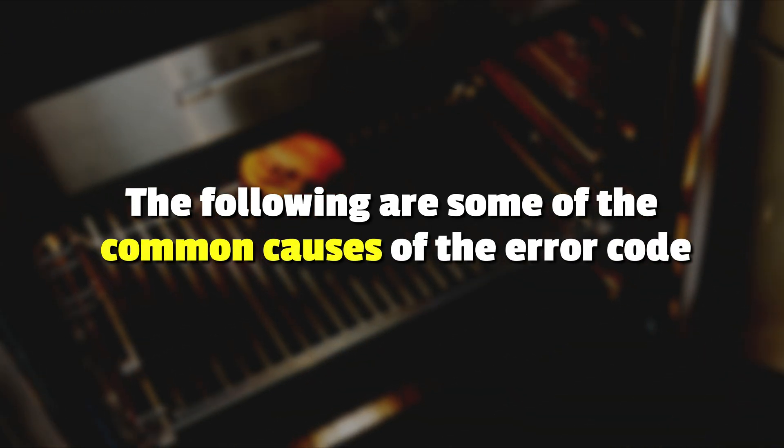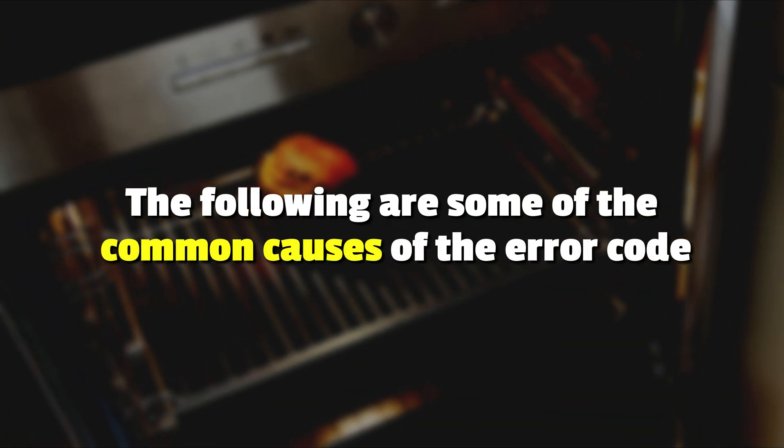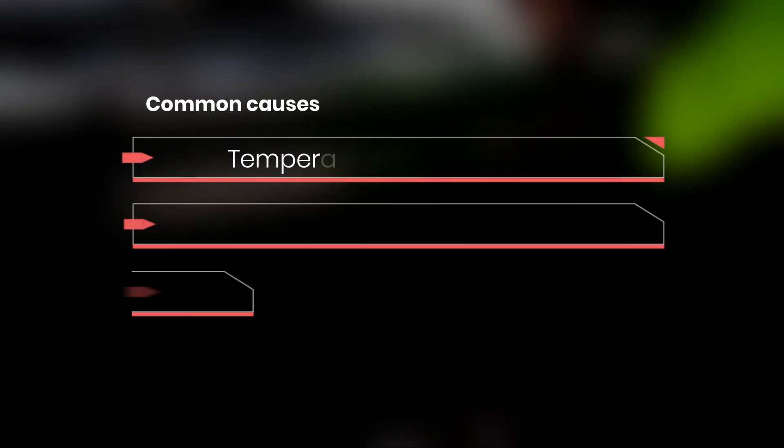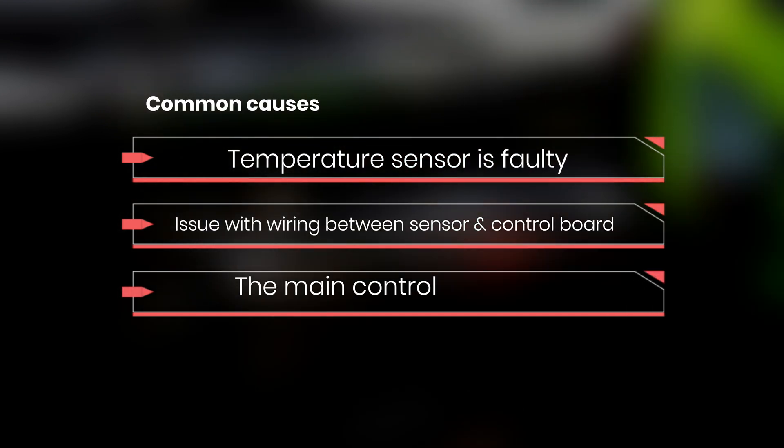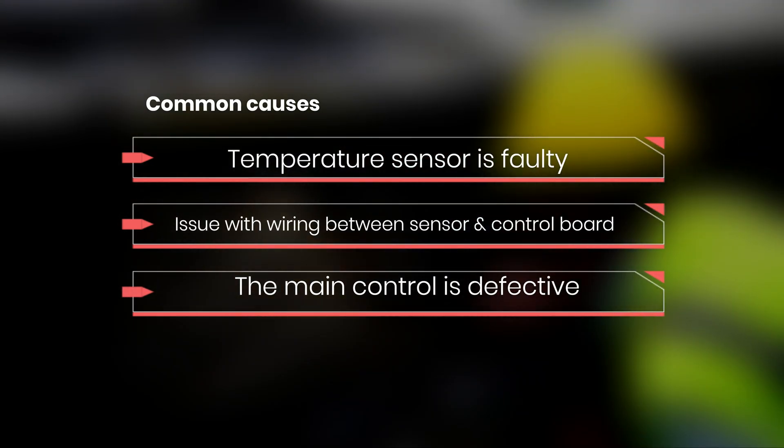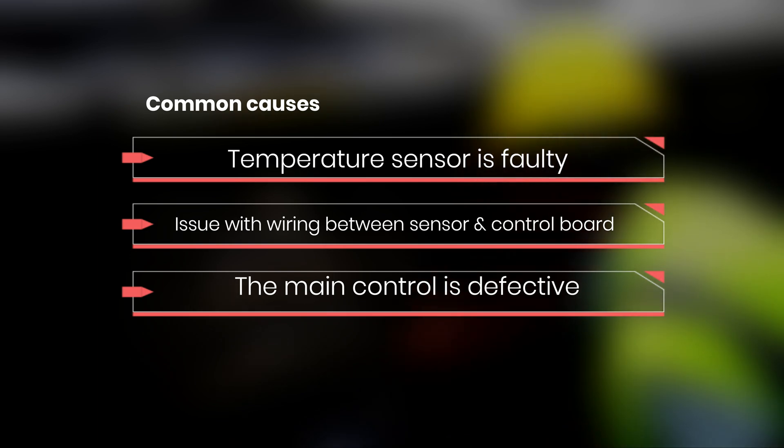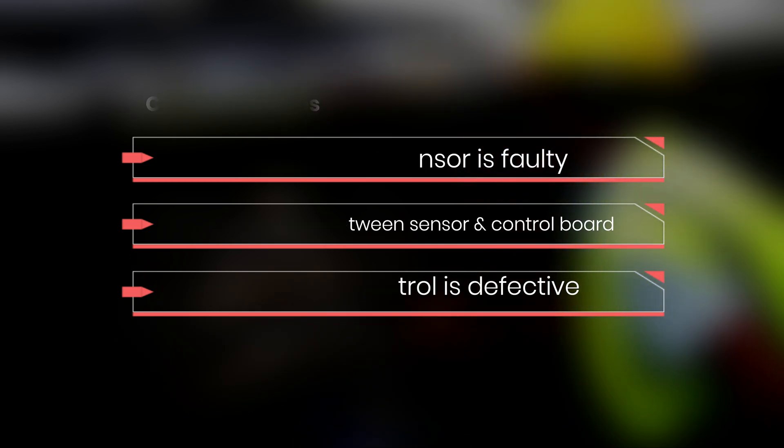The following are some of the common causes of the error code: The temperature sensor is faulty, there's an issue with the wiring between the sensor and the control board, or the main control is defective.